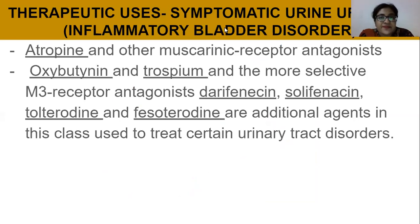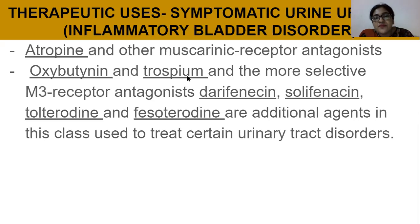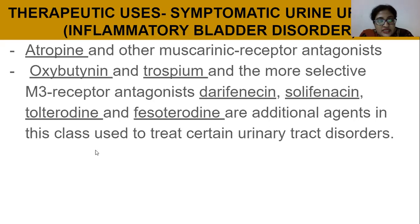For urinary therapeutic uses, anti-muscarinic drugs treat symptomatic urinary urgency and inflammatory bladder disorders. Drugs such as oxybutynin, trospium, and other more selective M3 receptor antagonists are additional agents in this class used to treat certain urinary tract disorders.